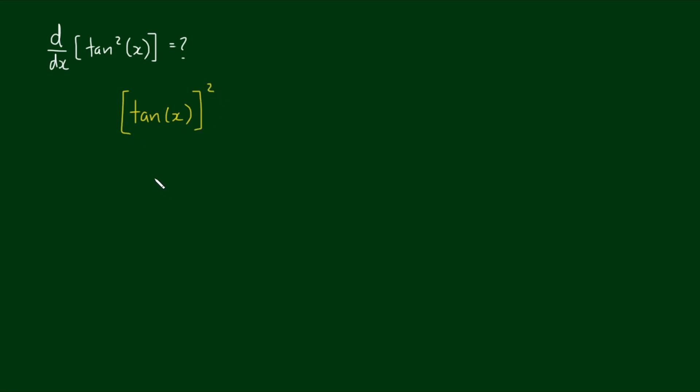So in effect we have a composite function. If we make u equal to tan of x, then tan squared of x is equal to the tangent of x all squared, which is equal to u squared.